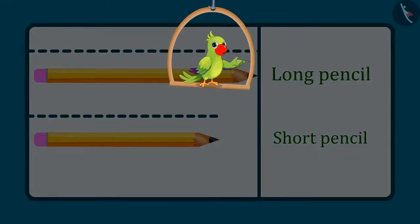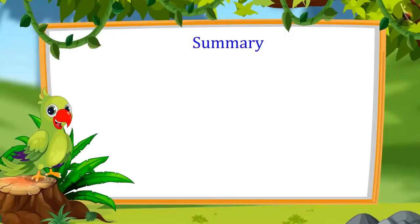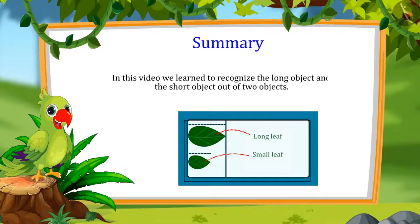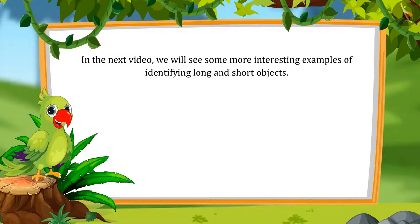So kids, you enjoyed comparing the length of objects, right? Now you also compare the length of objects around you and tell which is the long object and which is the short object. That is all for today. In this video, we learned how to identify the long object and the short object out of two objects. In the next video, we will see some more interesting examples of identifying long and short objects. Till then, bye-bye friends!